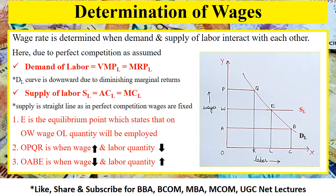The downward slope is due to diminishing marginal returns. In the case of supply, the supply is equal to the average cost, also due to the assumption of perfect competition. So SL equals ACL equals MCL, which is the marginal cost of labor. The supply will be a straight line as the wage rate is fixed, which is again the case of perfect competition as assumed. The point E is the equilibrium point, which states that at wage W, OC quantity of labor will be employed, as shown in the graph.